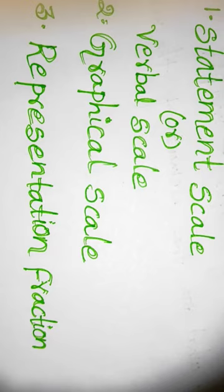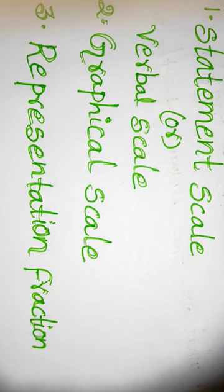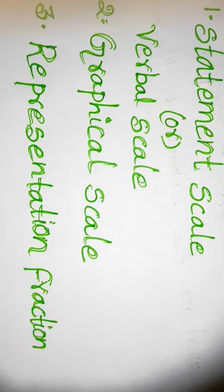The main elements of maps: the first is title, the second is scale. Types of maps: physical maps, political maps, thematic maps, and historical maps. The second element is scale. Types of scales: verbal scale, graphical scale, and the third is representation fraction.